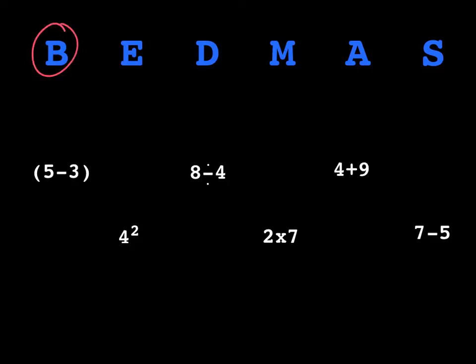B stands for brackets. Brackets basically means anything within those brackets or what in language we call parentheses. In this case, it's 5 take away 3. We would have to solve that first if we were doing a question that involved that. The E stands for exponents. Our next step after we've completed all the brackets is any exponent that we see has to be immediately solved.